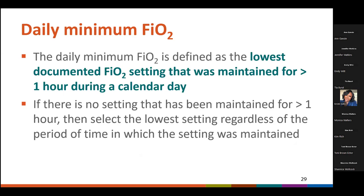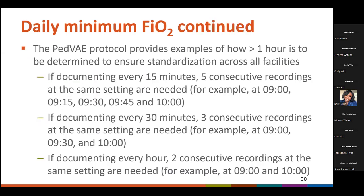The daily minimum FiO2 is defined as the lowest documented FiO2 setting that was maintained for greater than one hour during a calendar day. When determining the daily minimum FiO2, if there was no setting maintained for greater than one hour, you will select the lowest setting regardless of the period of time in which the setting was maintained. This may occur when ventilation was initiated late in the calendar day, discontinued earlier in the calendar day, or if the FiO2 settings have been very unstable throughout the calendar day. NHSN is not recommending or requiring that you document hourly or at any specific interval; this guidance provides a standardized way to determine what greater than one hour would be.